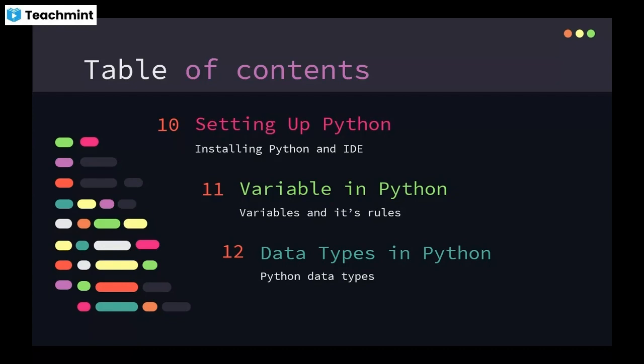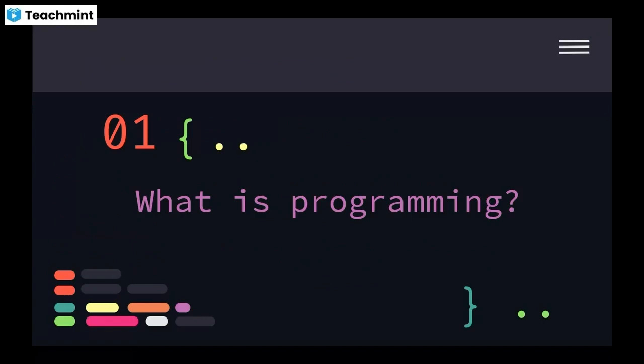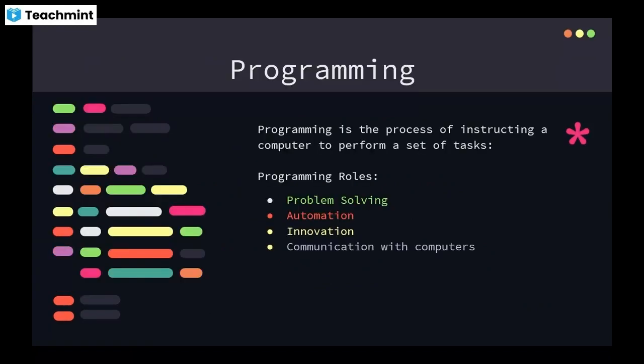The first topic is: what is programming? Programming is the process of instructing a computer to perform a set of tasks. If you want to communicate with a computer, you use a certain language — that language is called programming. Using programming we are able to communicate with our system. Programming roles may involve problem solving, automation, and innovation.